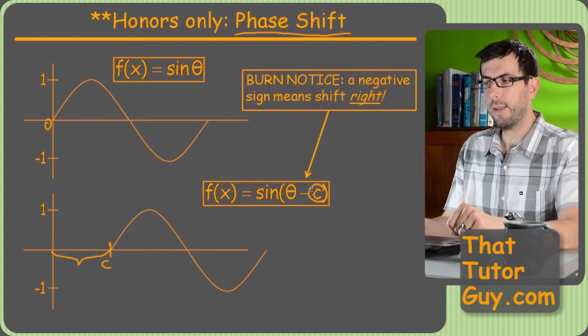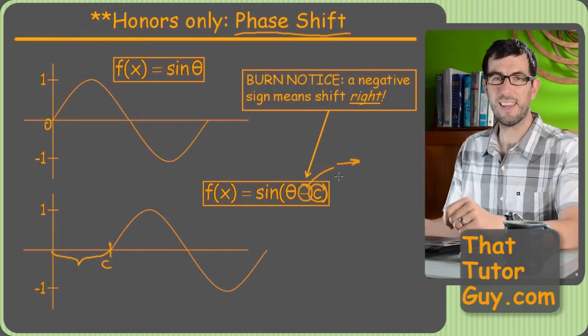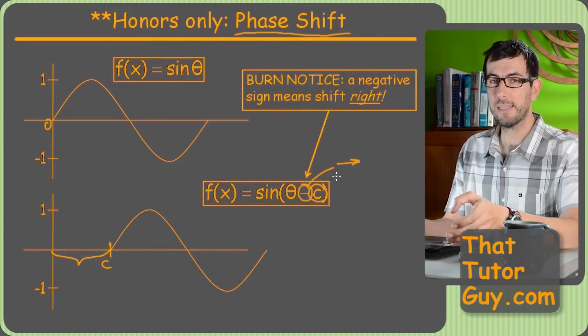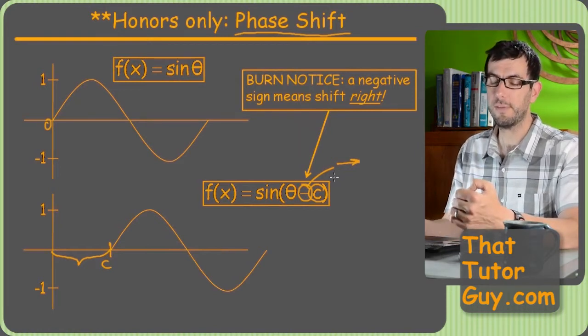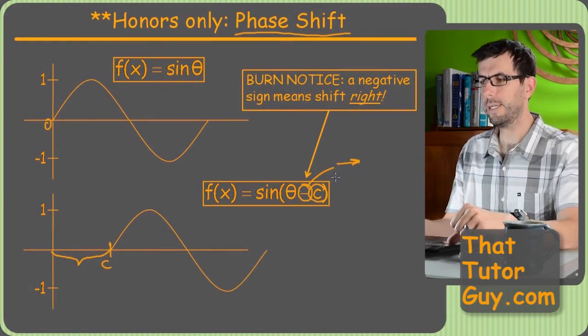And I want to point out, as I will many times, a negative sign actually means a right shift. So that kind of goes back to some stuff in Algebra 2 where a negative next to the x is actually a right shift, not a left shift. It's kind of opposite what you expect, but if you get used to it, it's not too bad.